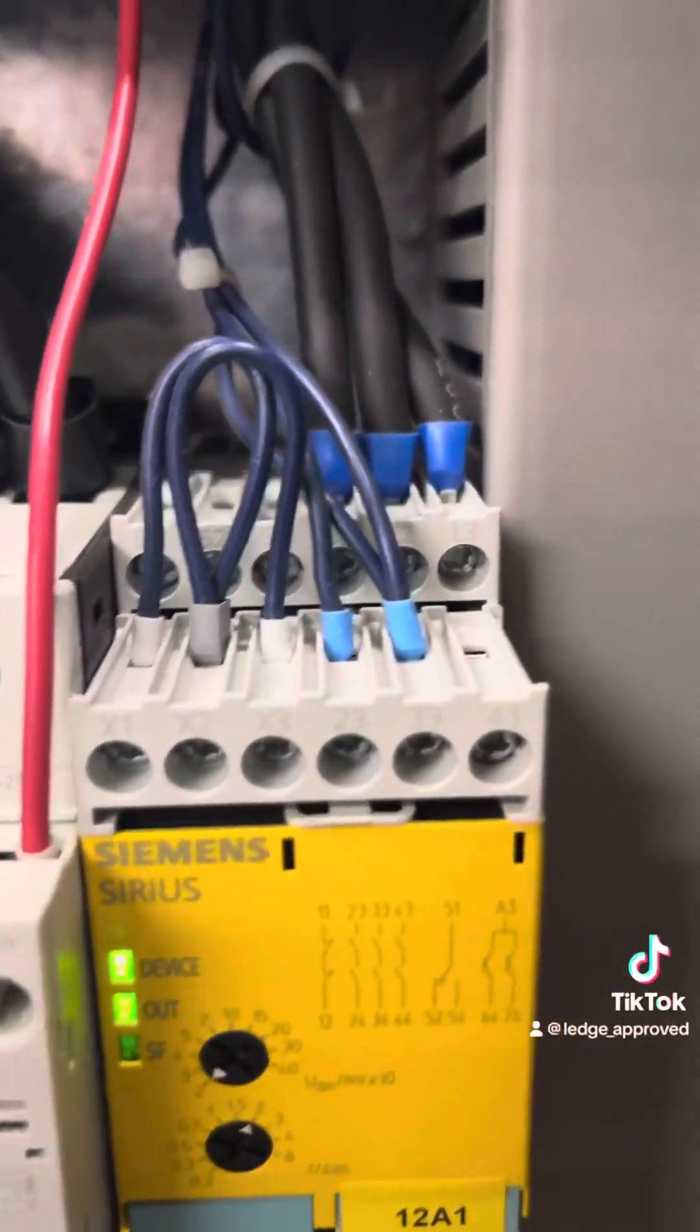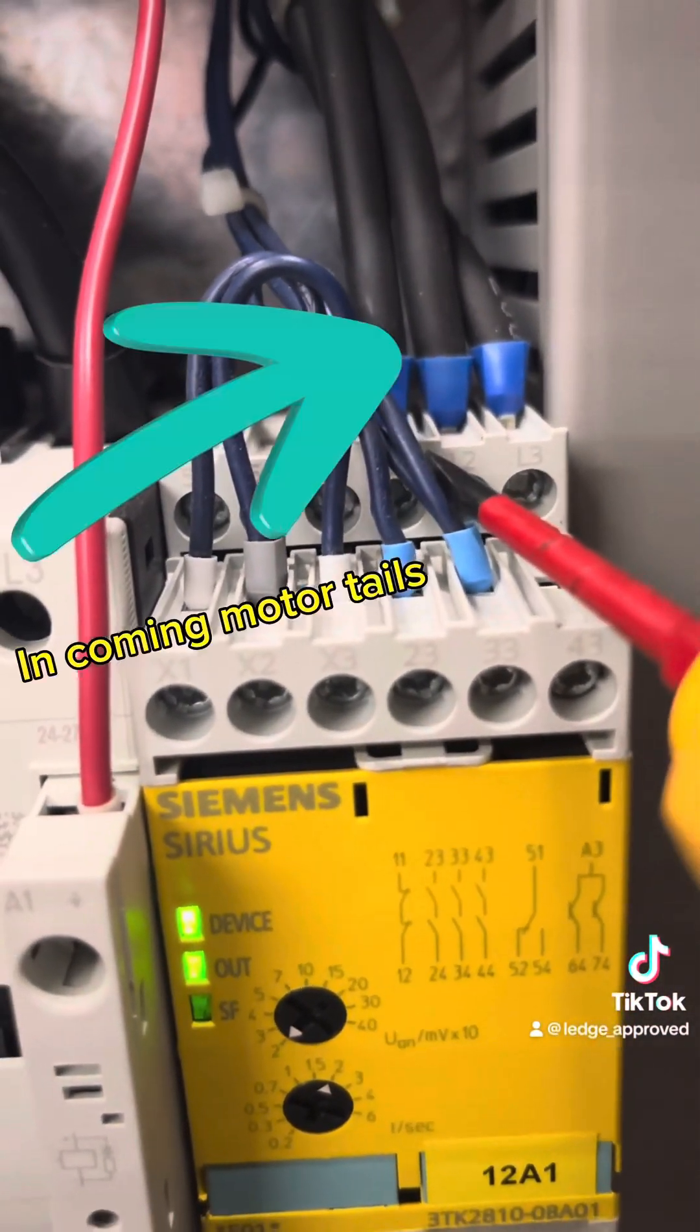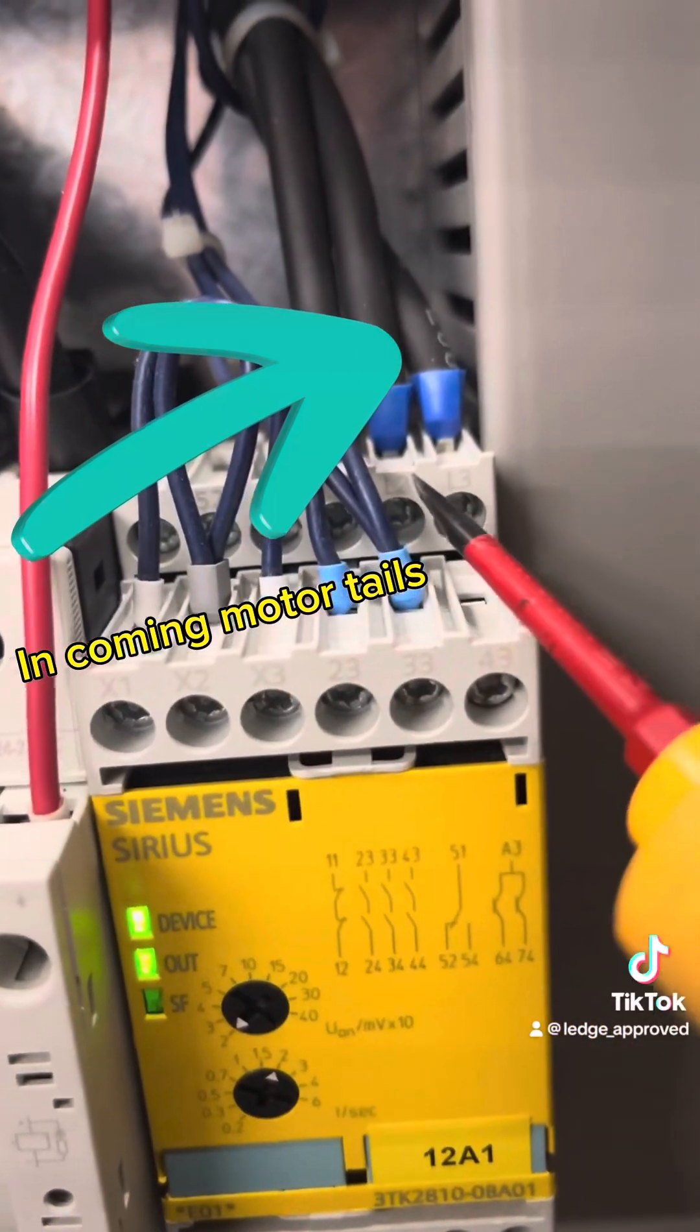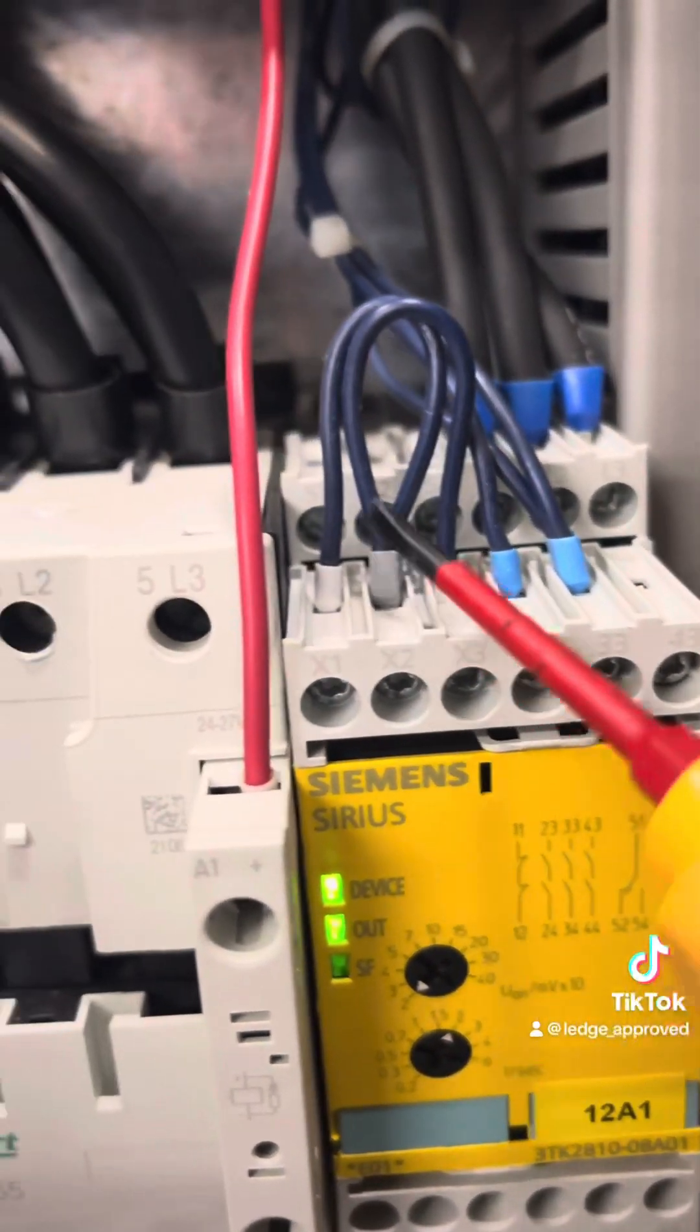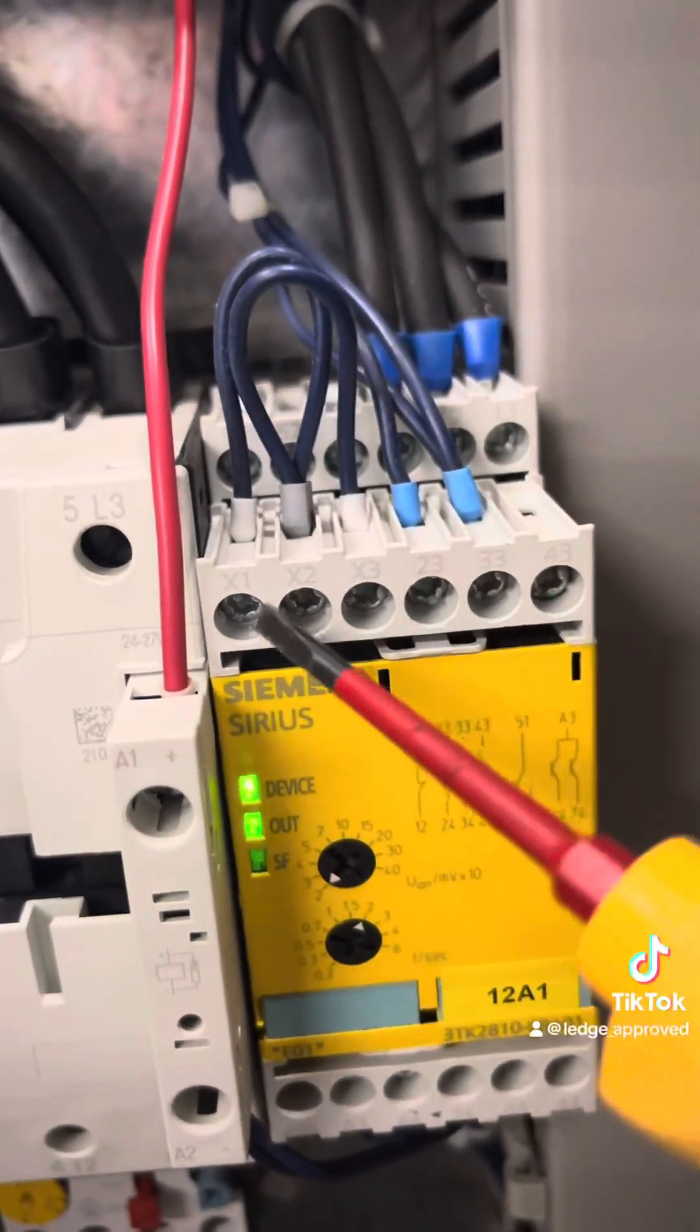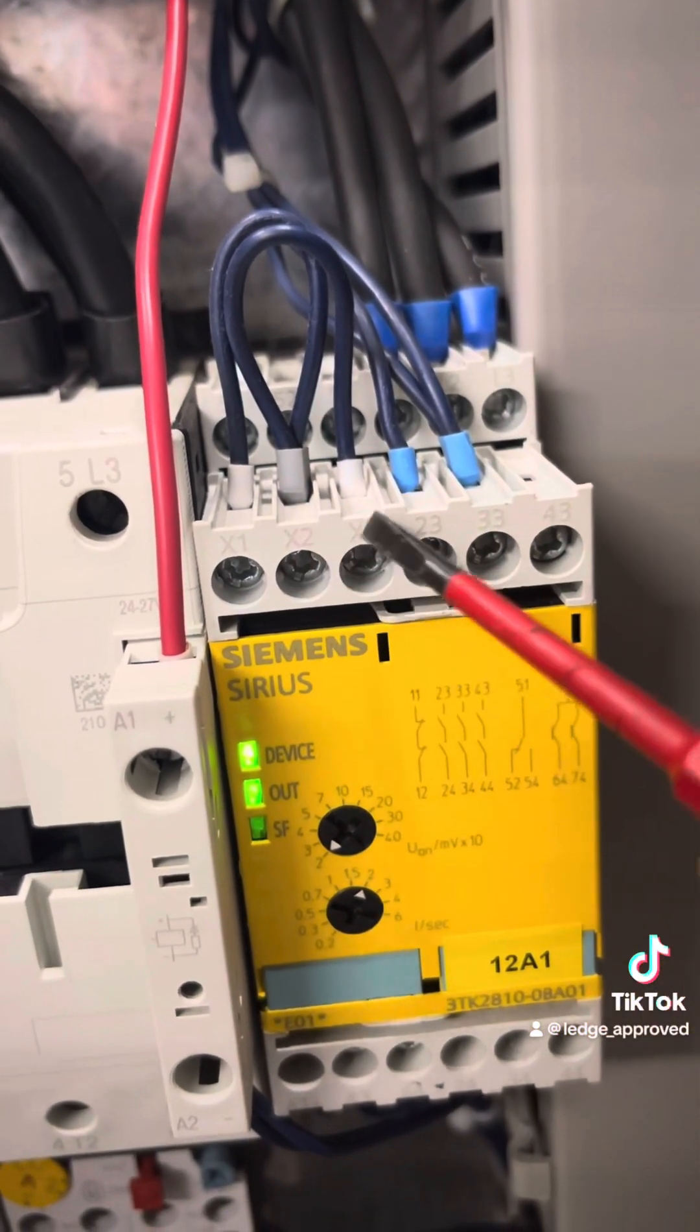the timer starts counting down and then opens the normally open contacts, which breaks the signal to the PLC for the servo drive brake, then releasing it, allowing the lid to open.